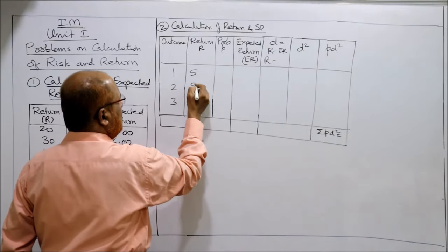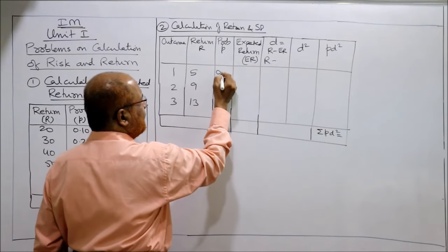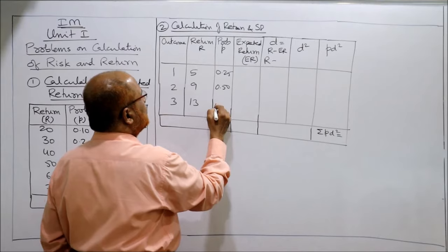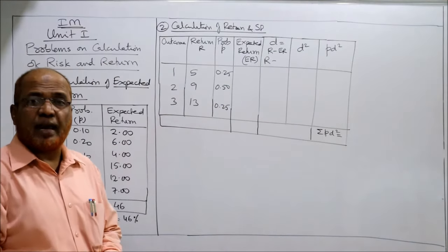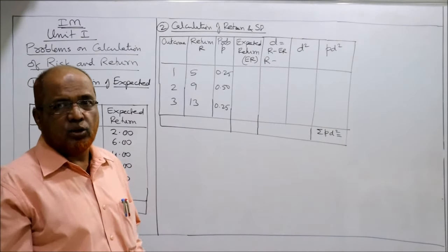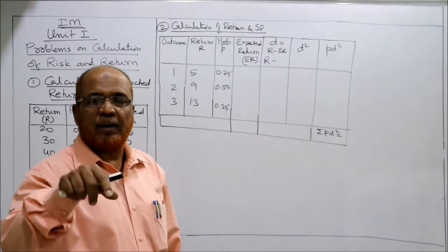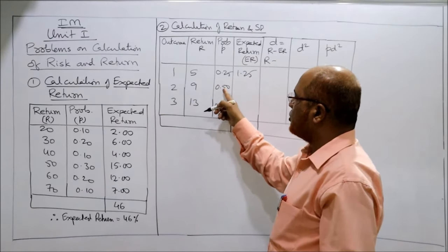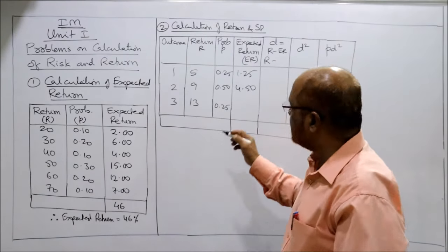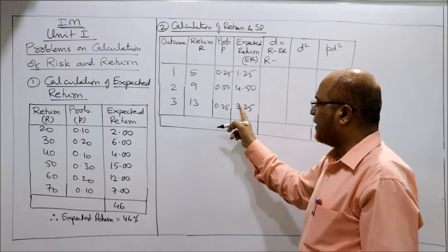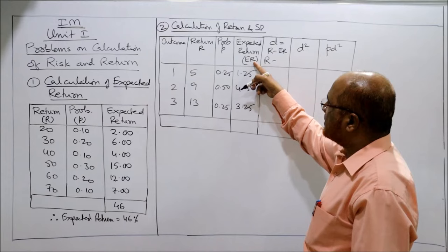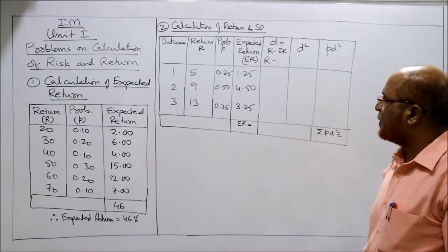Returns are given as 5, 9, 13 and probabilities are given as 0.25, 0.50, and 0.25. This is the first problem where we are calculating both return and risk. Three events are given but we are not concerned with events — simply the returns 5, 9, 13 and probabilities 0.25, 0.5, 0.25. Multiply probability with return: 5 × 0.25 = 1.25; 9 × 0.5 = 4.5; 13 × 0.25 = 3.25.